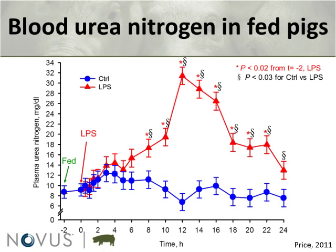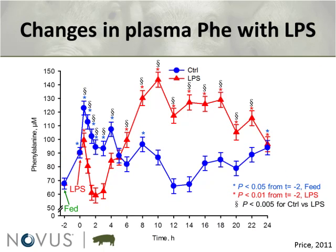In the control condition, we feed the pigs and about two hours later blood urea nitrogen shows only a slight increase — basically the excess of amino acids, because no matter how well we balance diets they're always slightly unbalanced. At that point we either give saline or LPS. With LPS we got the classical response reported in the literature across many species: an increase in blood urea nitrogen in the postprandial phase pretty similar to what you get in the fasted state, and all LPS levels were significantly higher compared to control animals.